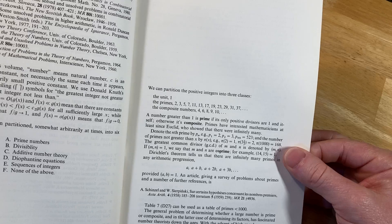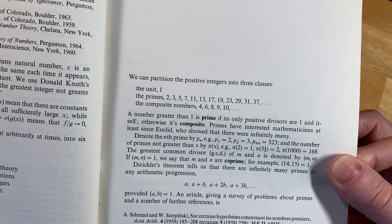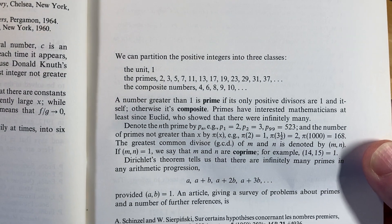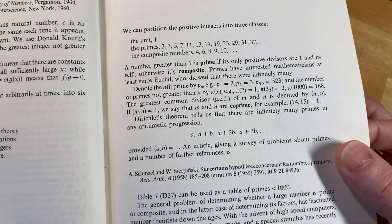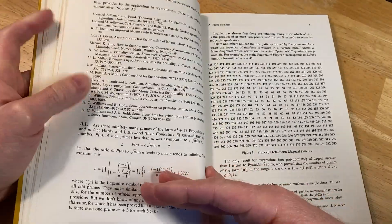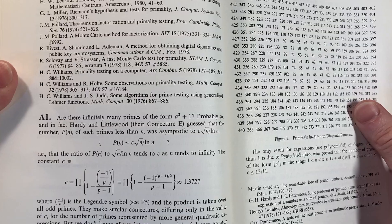Amazing. That's pretty cool. We can partition the positive integers into three classes. Cool. And then it goes on about primes, composite numbers.